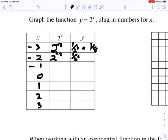This would be 2 to the negative 2, which is 1 over 2 squared, which equals one-fourth. 2 to the negative 1, which equals 1 over 2.